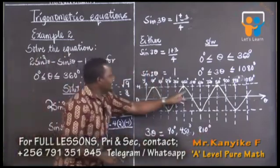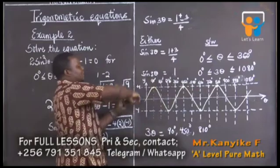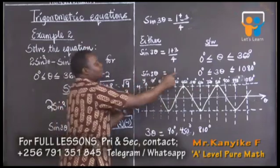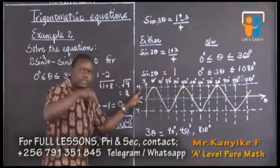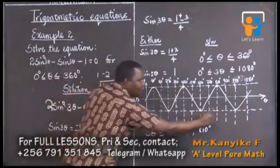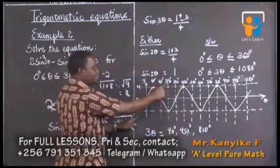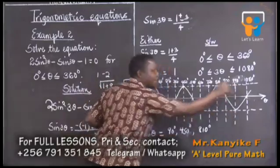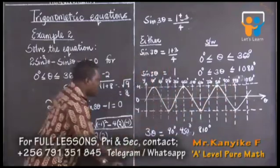At each of these ones, the curve was meeting at 1. We're interested in getting a positive 1. If it was negative 1, we'll look down at negative 1, look at the points where the curve met. And we said here we had 270, 630, 990. That's not what we want.